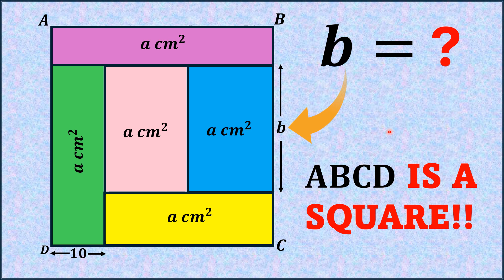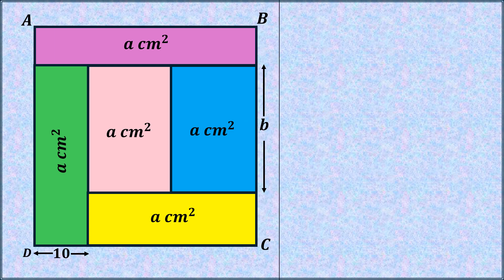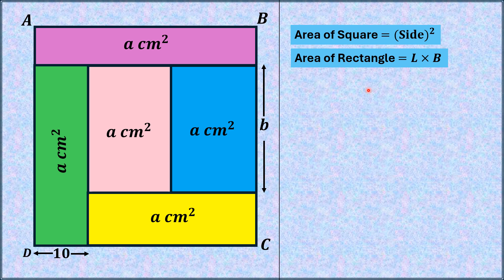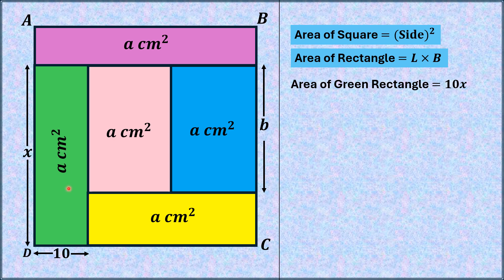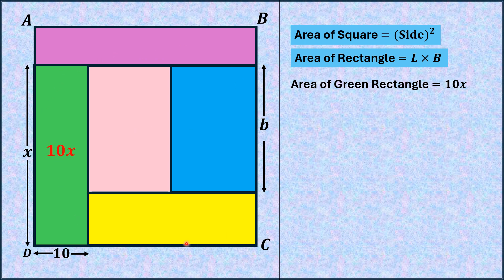Let me move towards the solution. First of all, we write two formulas: one is the area of a square, which is equal to the square of its side, and the other is the area of a rectangle, which is equal to length times breadth. Now, let's call the length of the green rectangle X — its width is 10 centimeters. So the area of this green rectangle is equal to length times breadth, that is equal to 10X. We replace A as 10X, and since all the areas are equal, we replace them all by 10X.